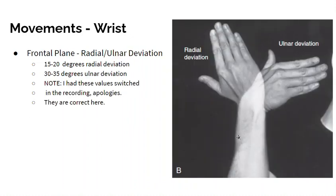In the frontal plane about the anterior-posterior axis, we have radial deviation moving towards the thumb side and ulnar deviation moving towards the pinky side. About 15 to 20 degrees of radial deviation, and 30 to 35 degrees of ulnar deviation.